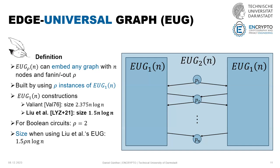For the remaining talk we call the nodes of the graph G poles. What we are looking for are so-called edge-universal graphs: G prime graphs that should be able to embed any graph with n nodes and a specific fan-out row. We can do this by using instances of edge-universal graphs with fan-out one, and we connect all of our poles to these graphs.